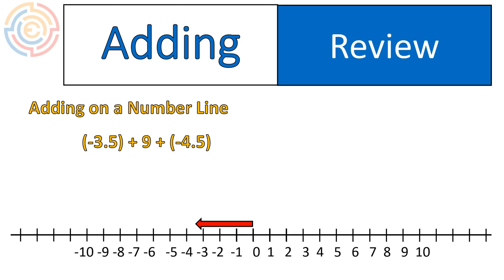I would start at 0 and move to the left 3.5 or negative 3.5. See how I end up there in between negative 3 and negative 4. Then I would add 9 to that, bringing me up to 5.5. Then when I add on that negative 4.5, it brings me back towards the left another 4.5, ending me on the point 1.